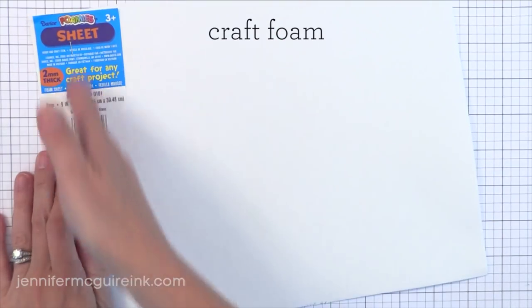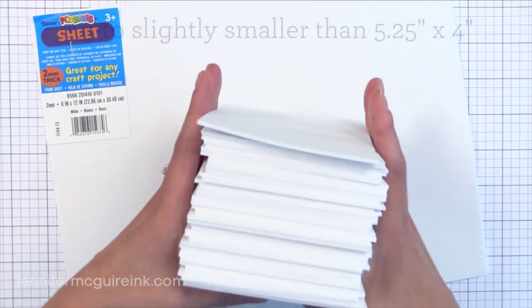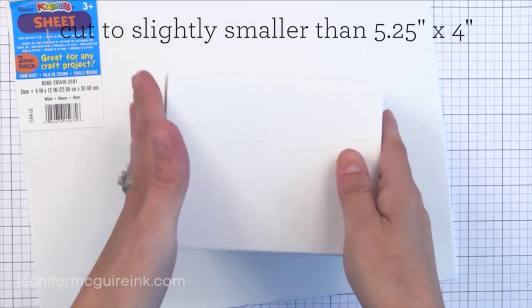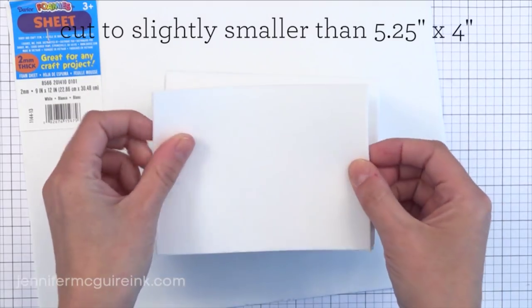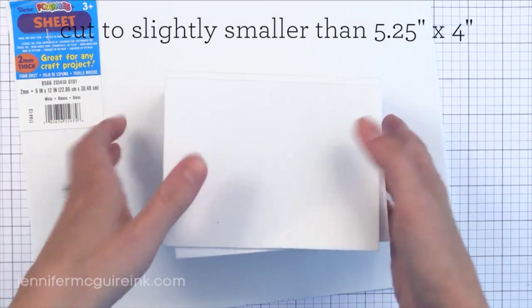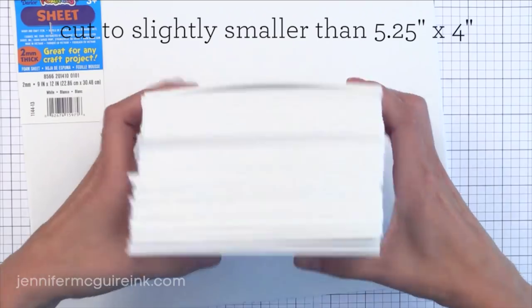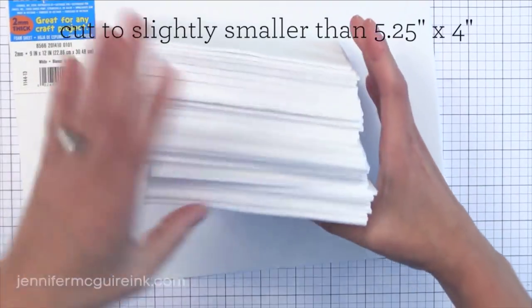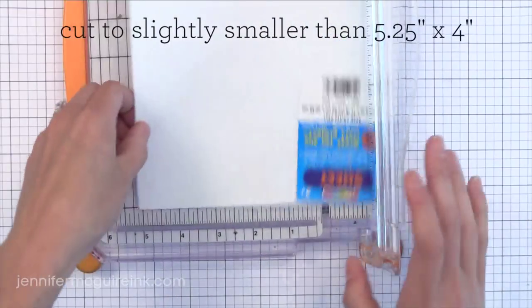Now when I get all these sheets of craft foam I go ahead and pre-cut mine. You don't need to do this but I find it helpful. I pre-cut mine to slightly smaller than 5 1⁄4 by 4 inches because if I'm going to add a panel to the front of my card it's likely 5 1⁄4 by 4 inches because that's slightly smaller than the note card that I usually make. And if I need a smaller piece I just cut this down and save the extra.